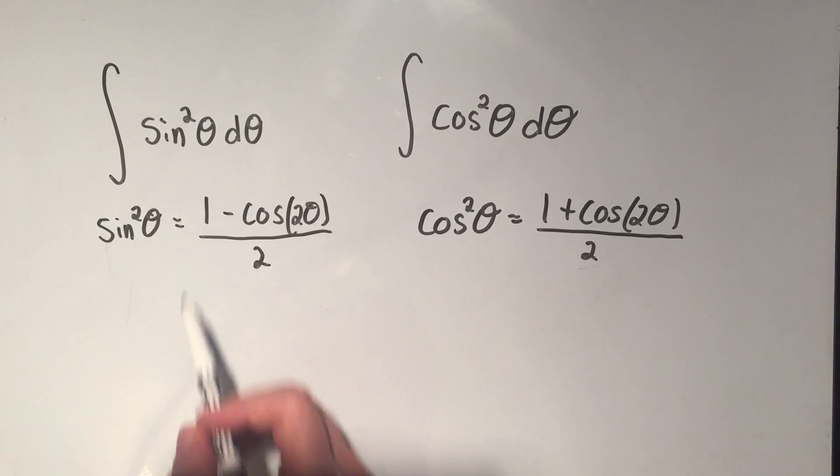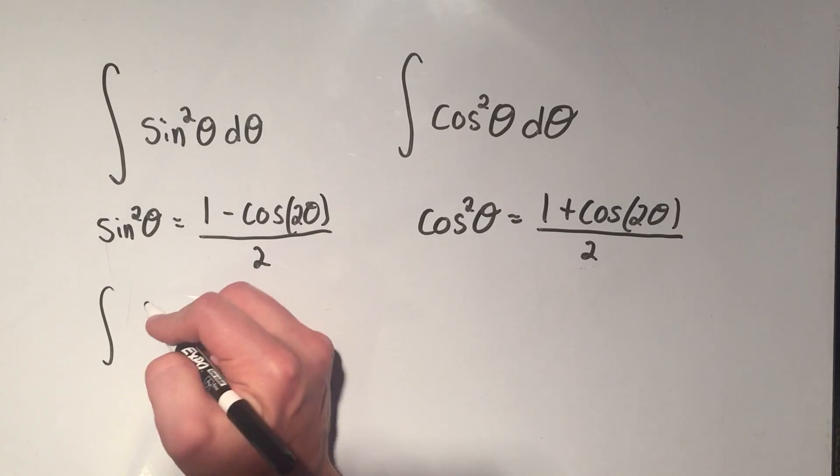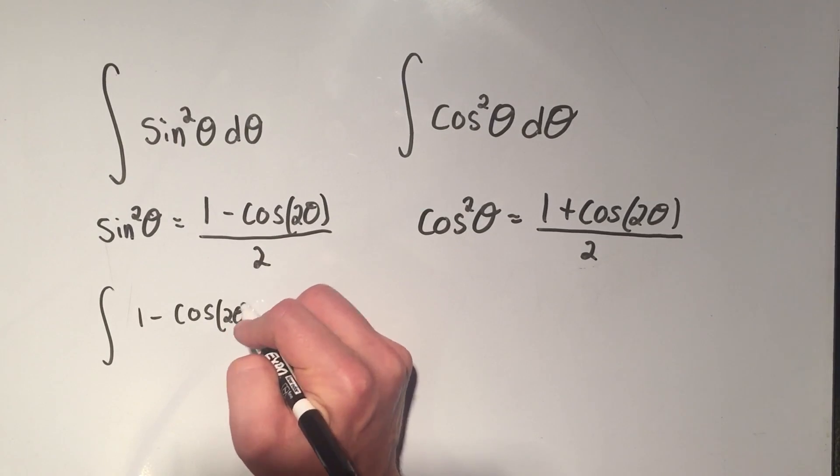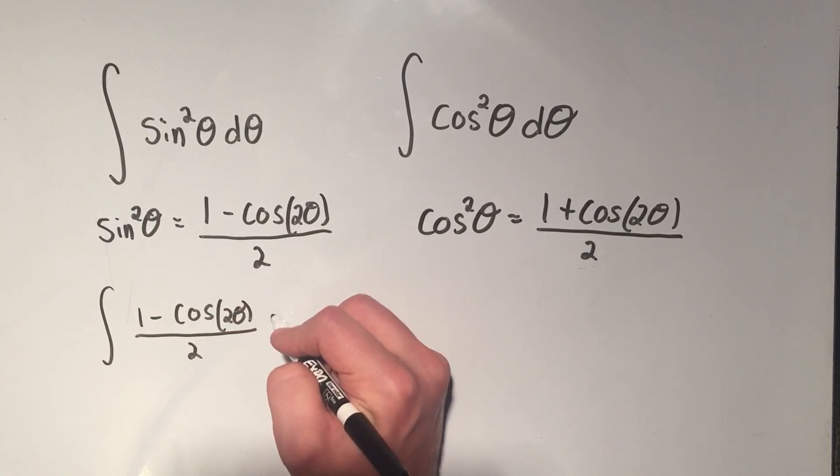So that means that this antiderivative is just going to turn into 1 minus cosine of 2 theta over 2 d theta.